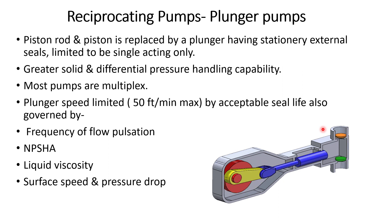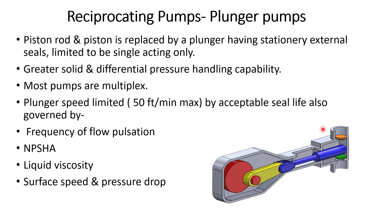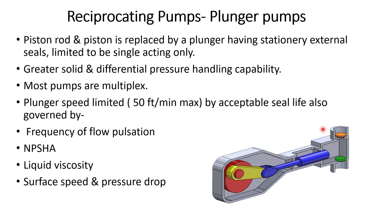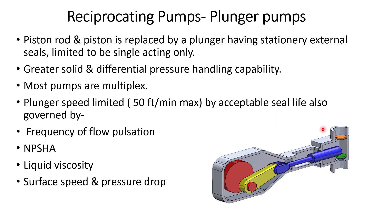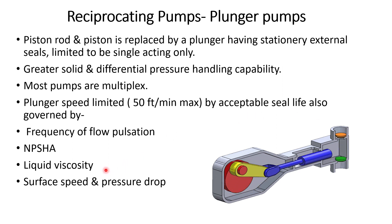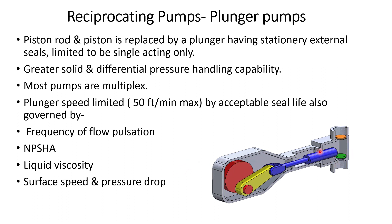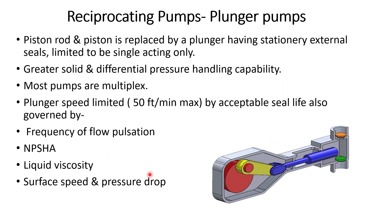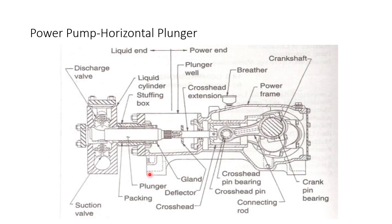The pumping speed is limited to 50 feet per minute maximum. The acceptable seal life is also governed by the frequency of flow pulsation, the net positive suction head available, the viscosity of the liquid, the surface speed, and the pressure drop across the pump — which occurs due to leakage through the running clearance of the plunger from the discharge side to the suction side.